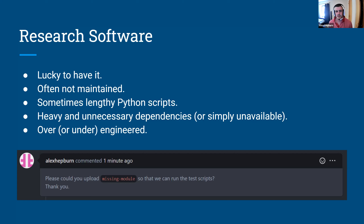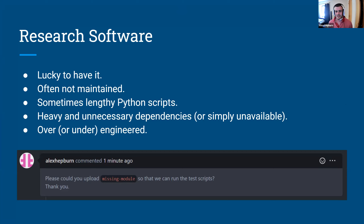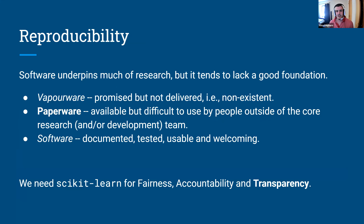There could be heavy or unnecessary dependencies — something like pandas is quite a heavy dependency if all you're using it for is loading data or reading a CSV. Code could be over- or under-engineered: 20 classes for something very simple, or everything crammed into one class. There are a lot of problems people can have with research code, and the example shown is based on a real case where people haven't uploaded a module and you can't run the code. So one of the key things we're talking about is reproducibility.